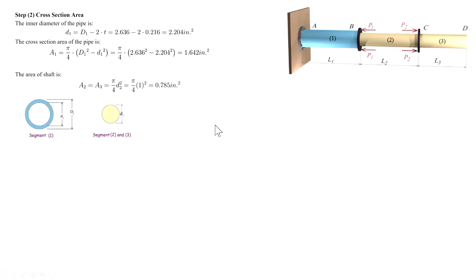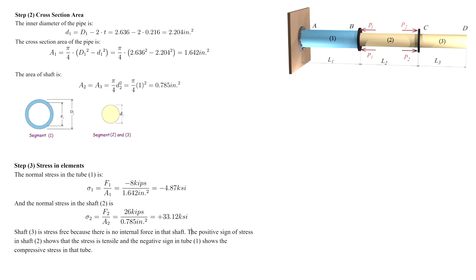After determining the area for each segment, we can determine stress — simply force over area. Segment 3 is stress free because there is no internal force. Stress in segment 2 is positive because the internal force is tensile. On the other side, element number 1 is being compressed, which means the stress is compressive and gets a negative sign.